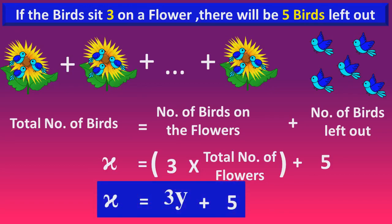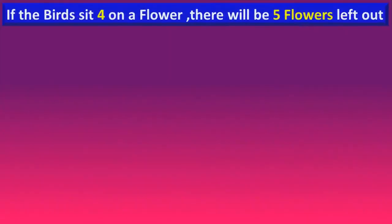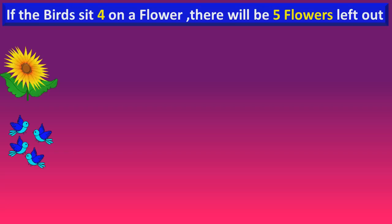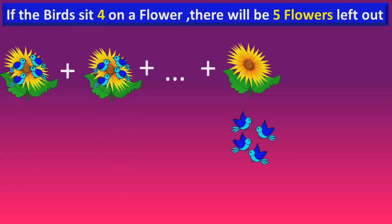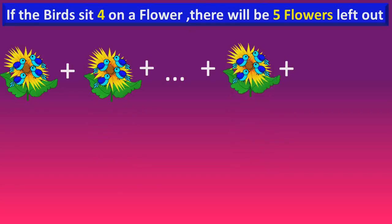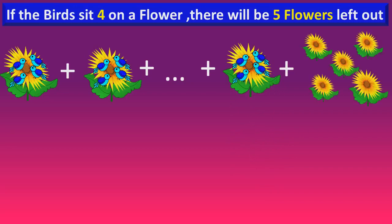Next, if the birds sit four on a flower, there will be five flowers left out. That means the birds are sitting four on each flower. So at a certain stage, all the birds are over, and still there are five more flowers remaining.